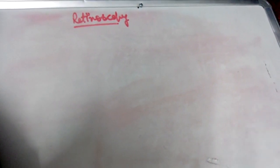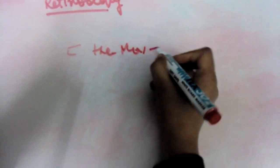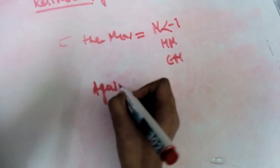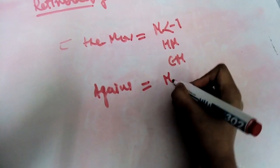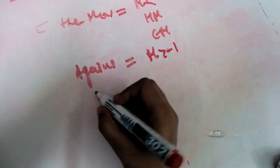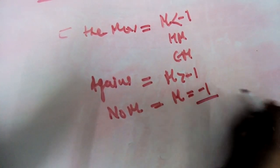Hi everyone. Today I'm going to tell you how to calculate power from the retinoscopy reading. In retinoscopy, we use either a concave mirror or a plane mirror. We observe the movement of the light reflex — whether it moves with the mirror, against the mirror, or shows no movement. With movement: myopia less than minus one, hypermetropia, or emmetropia. Against movement: myopia more than minus one. No movement: myopia equal to minus one.